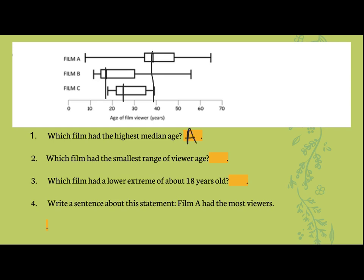Which one had the smallest range? Remember, range is your highest minus your lowest. Which one has the minimum and maximum closest together would be film C — the smallest range. Sometimes they'll call it lower extreme or minimum, or maximum or upper extreme, either one. So film C also has a lower extreme of about 18.